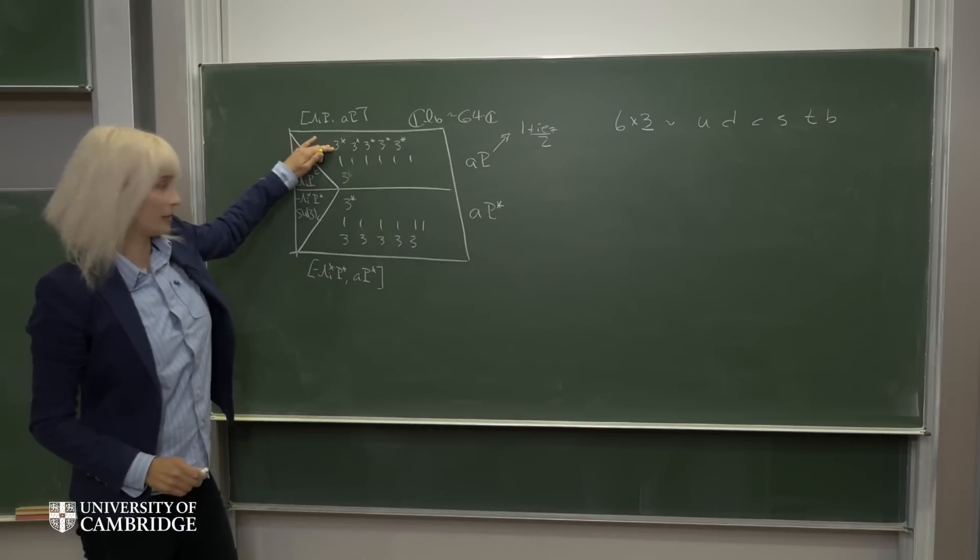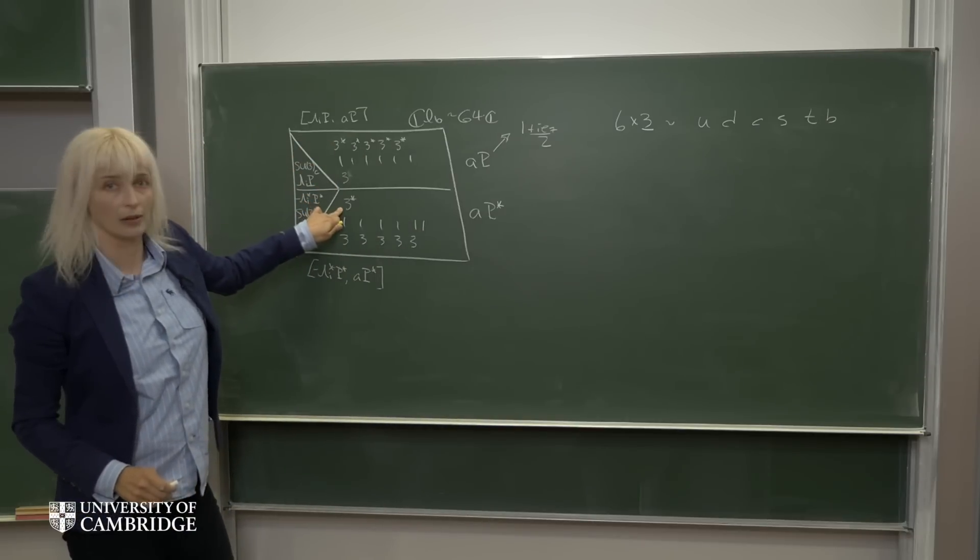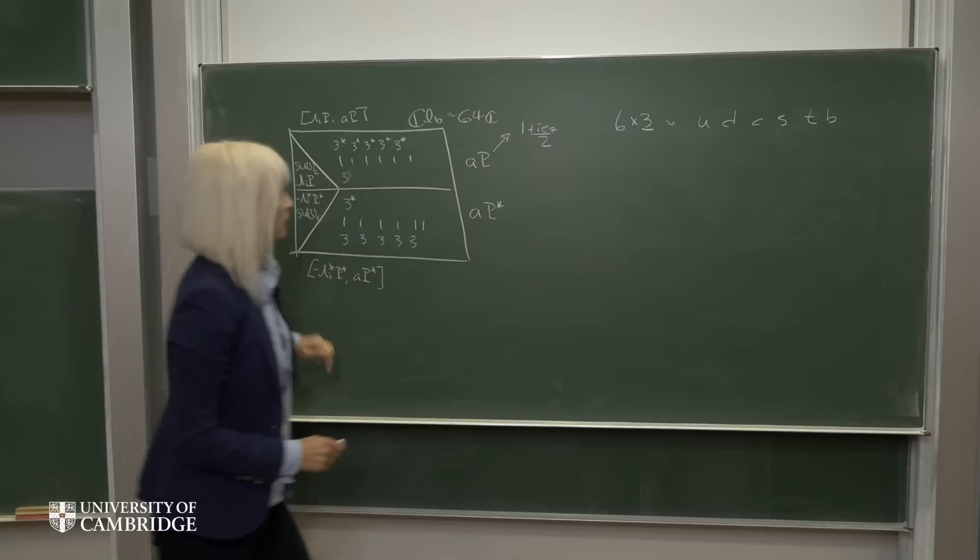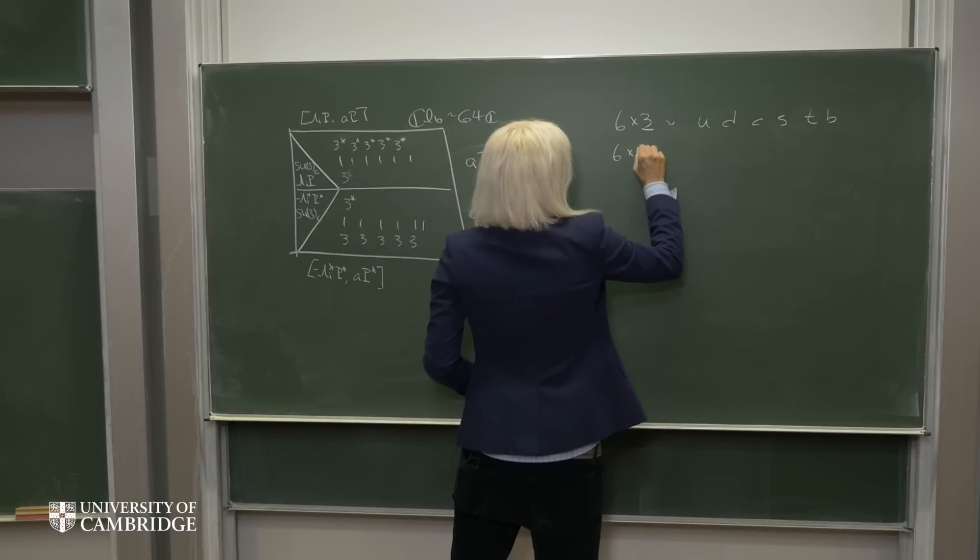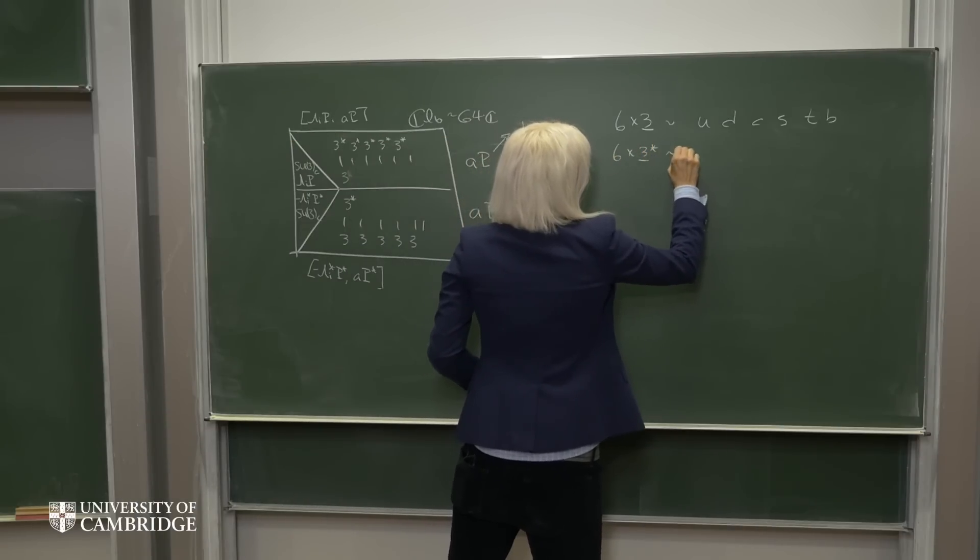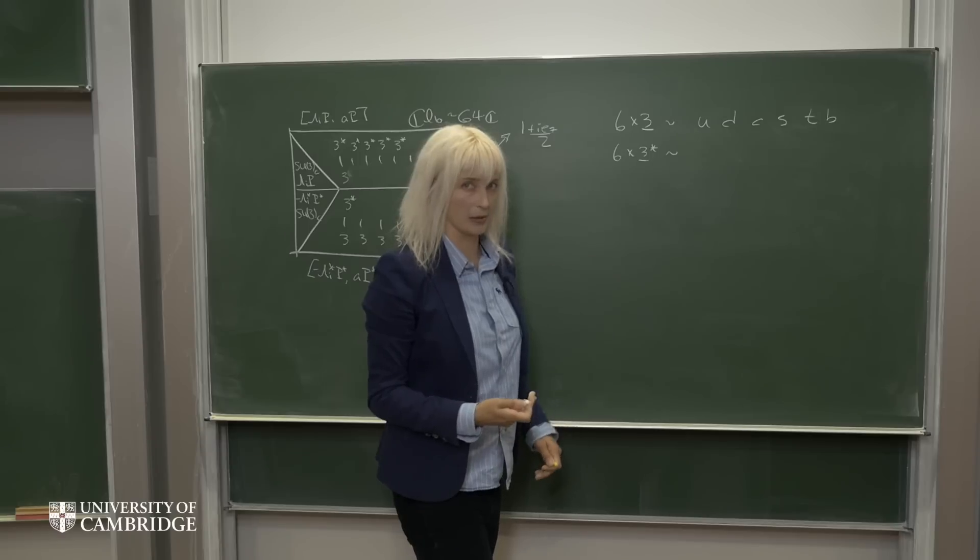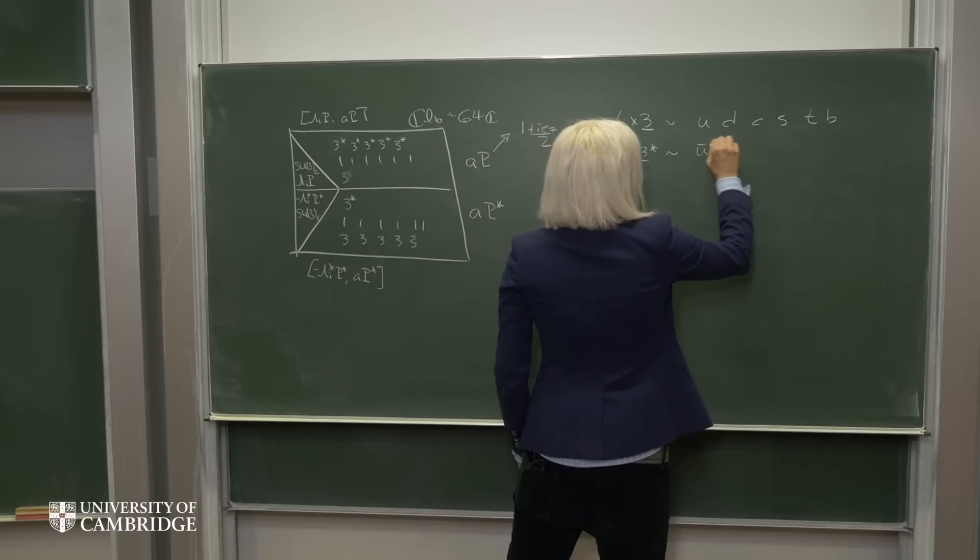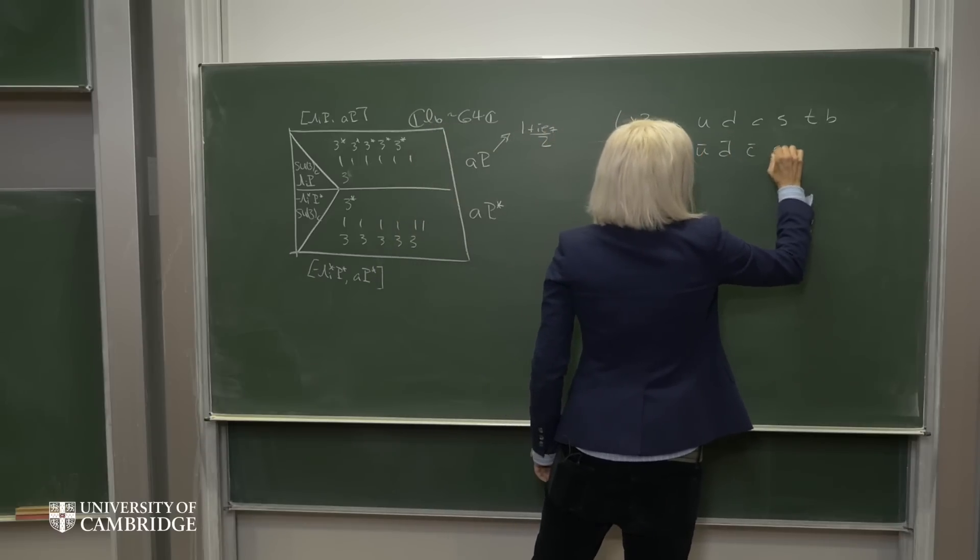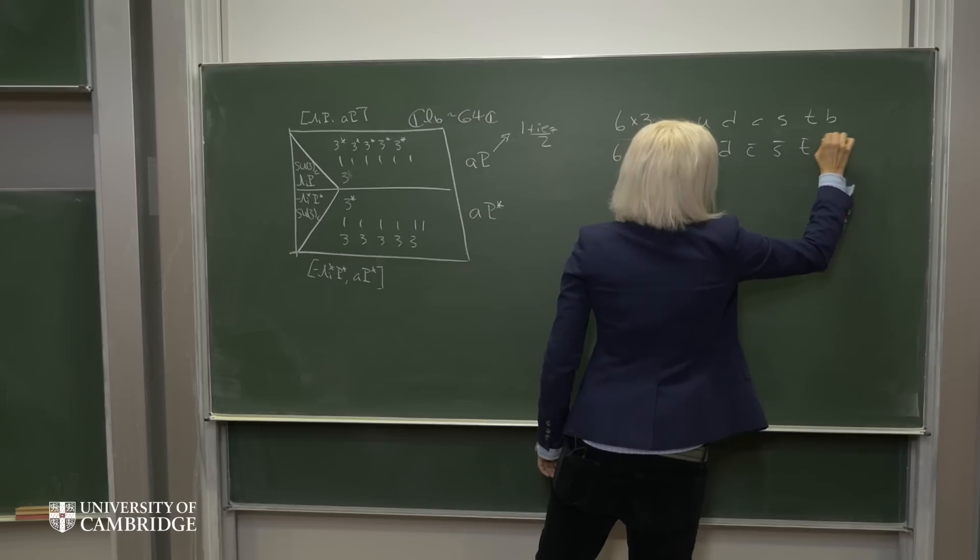Then there are 6 singlets here. Then there are 5 antitriplets here and 1 antitriplet here. So we have 6 antitriplets in total, which correspond to the SU3 representations that we would expect for the anti-up, anti-down, anti-charm, anti-strange, anti-top and anti-bottom quarks.